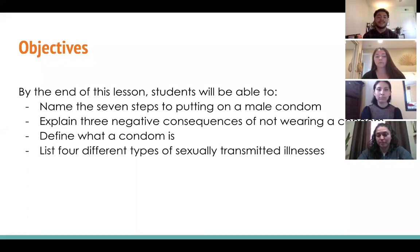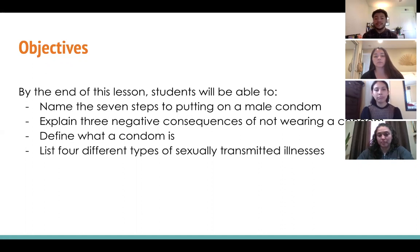Moving forward, let's talk about objectives. By the end of this lesson, students will be able to meet four objectives: one, name the seven steps to putting on a male condom; two, explain three negative consequences of not wearing a condom; three, define what a condom is; and four, list four different types of sexually transmitted illnesses.